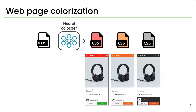Web page colorization is a task aimed at automatically colorizing web pages in a plausible and diverse manner. We learn a neural model that takes processed HTML as input and generates color styles that can be converted to CSS.